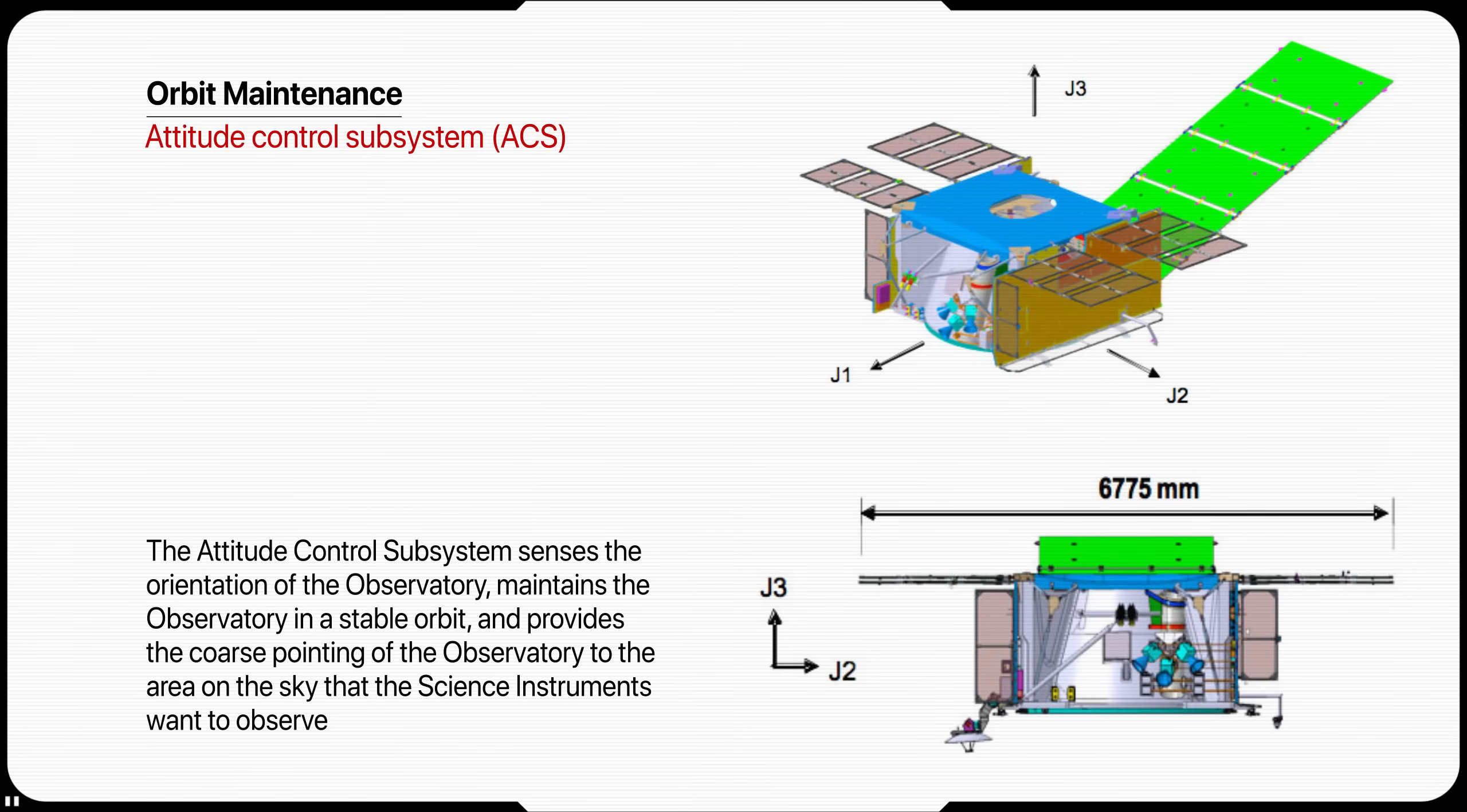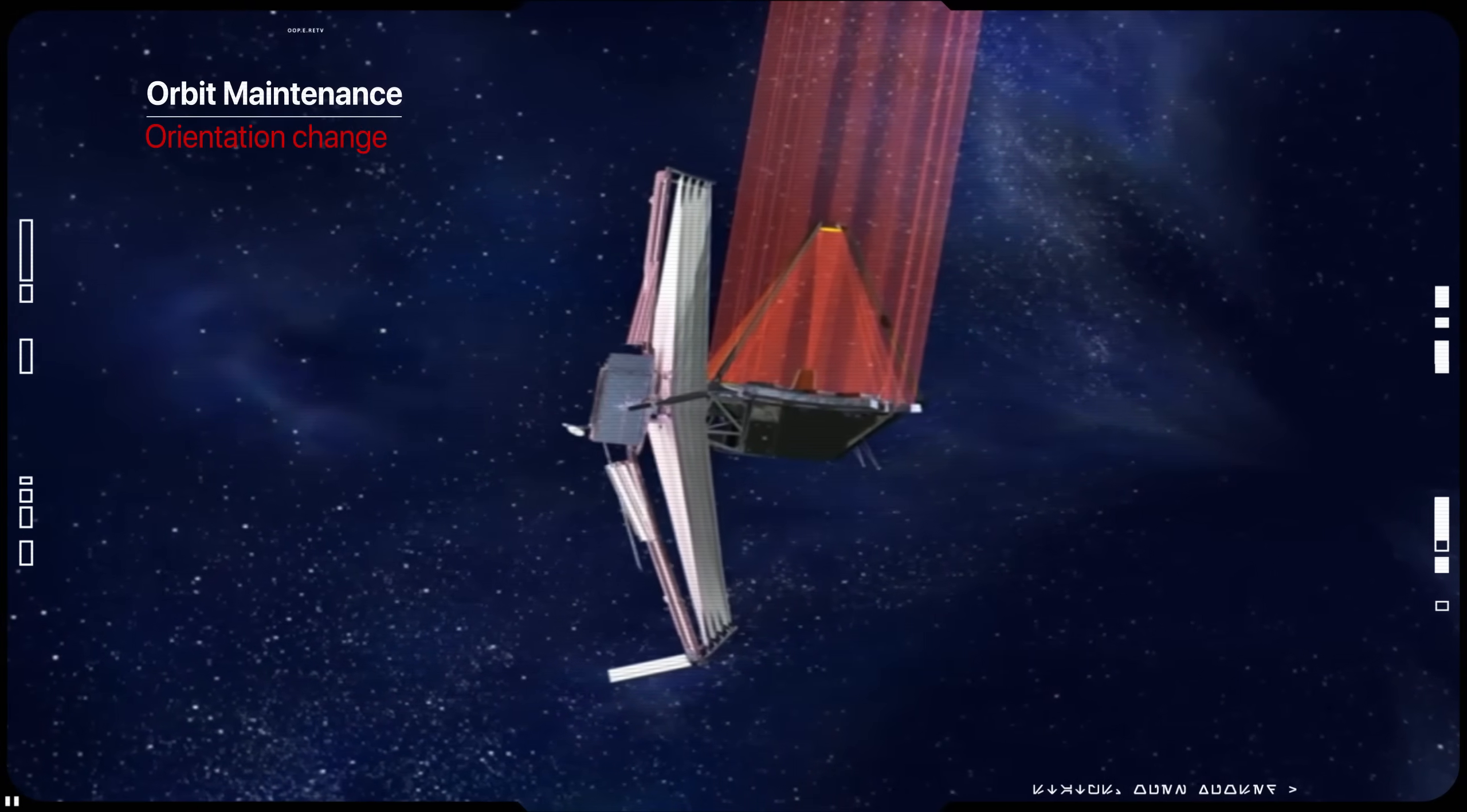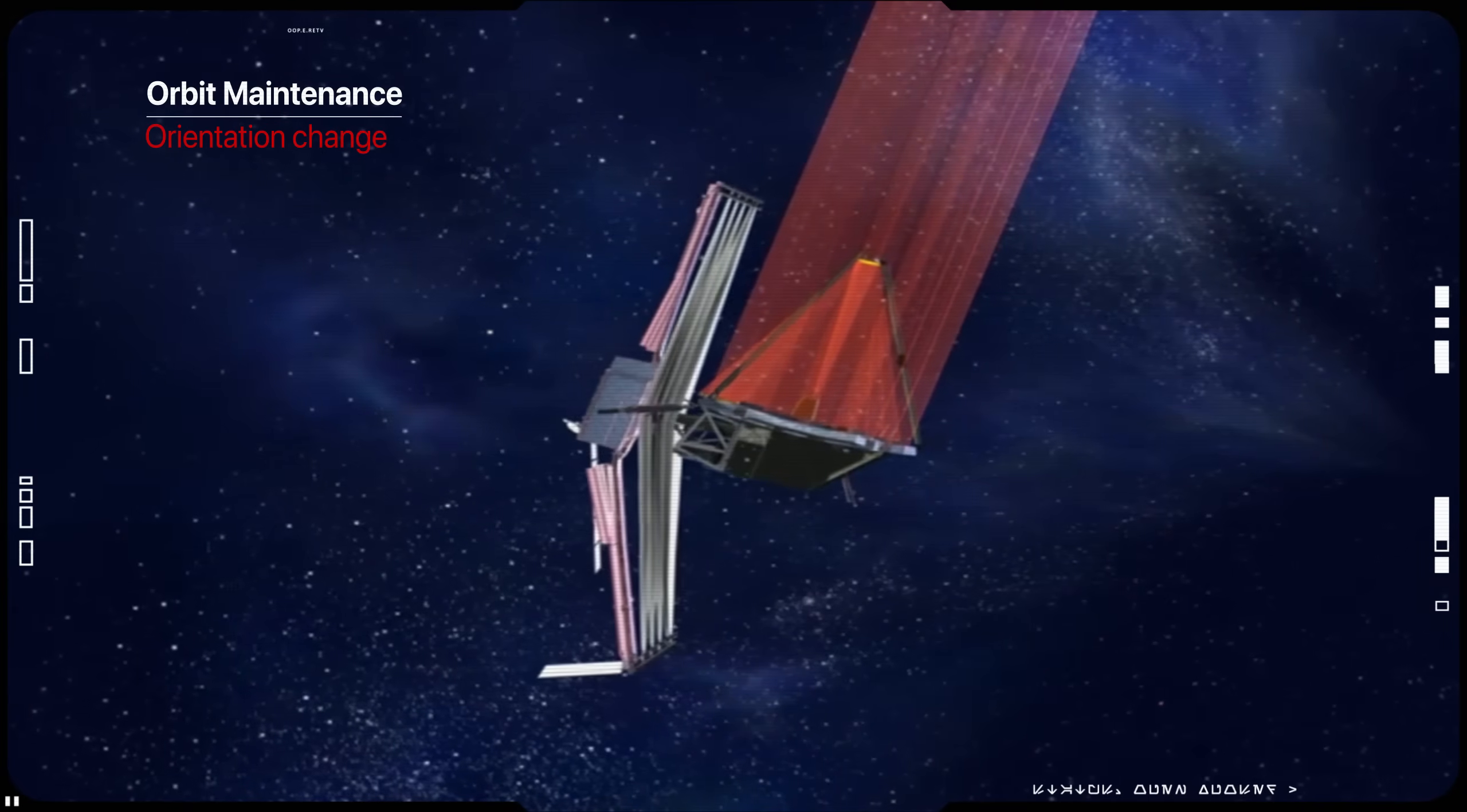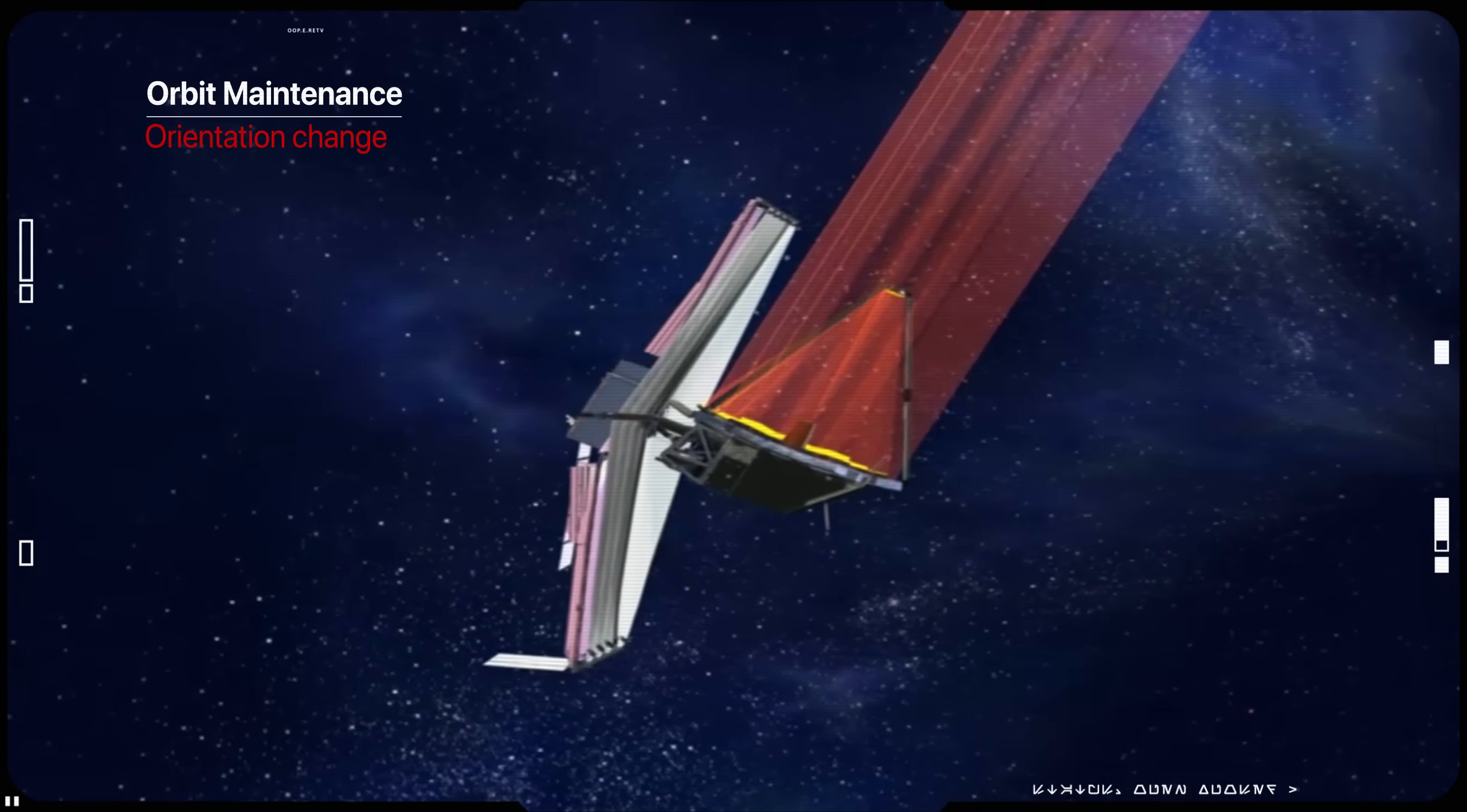The attitude control subsystem ACS counteracts this torque by appropriately changing the spin rate on the reaction wheels, with the consequence that angular momentum accumulates in the reaction wheels. Momentum accumulation depends on the solar pitch angle, the roll orientation of the telescope, and the visit duration at a particular point in position. The angular momentum of the reaction wheels must be managed to be kept within operational limits.